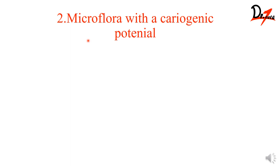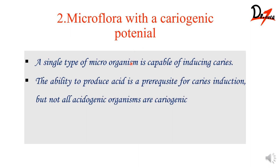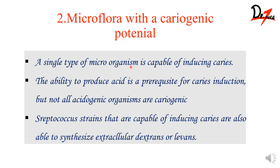Now the second factor: microflora with cariogenic potential. A single type of microorganism is basically enough to induce caries. However, an acidogenic microorganism does not necessarily mean it is cariogenic — the ability to produce acid alone does not mean it can cause caries. Not all acidogenic organisms are cariogenic. The main culprits are streptococcus strains, because they can synthesize extracellular dextrans, which is why they are most commonly associated with dental caries.